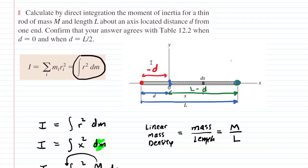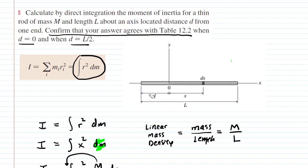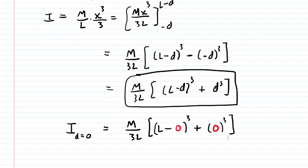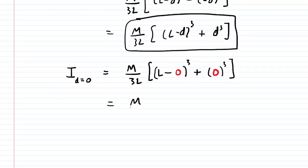The question wanted us to confirm some things. It says confirm that your answers agree with table 2.2 for two different values of d. So we're going to start with d is equal to 0. And if you look back at the diagram, if d were equal to 0, then basically we would be trimming off this much of the rod. And our axis of rotation would be through the far left end right there. So let's actually plug in d equals 0 and see what we get. Now we just simplify inside the brackets here. We have l minus 0, which is l. So this becomes l cubed and then plus 0. So that's just l cubed. We can cancel a factor of l from the numerator and denominator. And this leaves us with ml squared over 3.